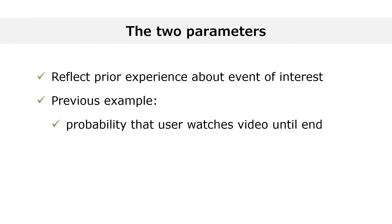Suppose that 10 users watched the video before you. 6 of them watched it until the end, while the other 4 didn't. Then, I will set the two parameters alpha and beta equal to 6 and 4 respectively.